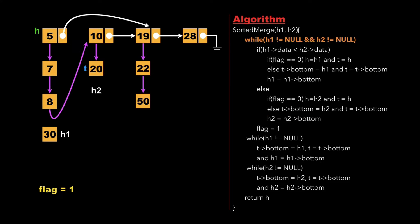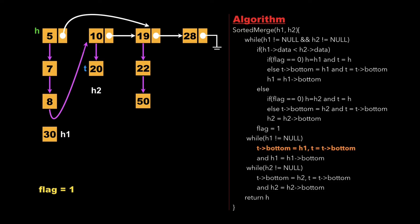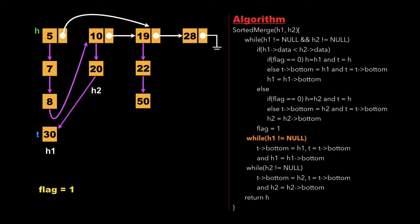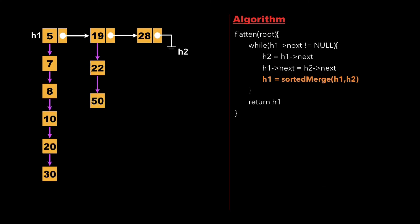Since h2 is now null, we exit the while loop and enter another while loop where h1 is not null. We update t's bottom as h1, so node 20's bottom pointer points to 30, and t updates to 30. Then h1 advances to h1's bottom, pointing to null. We exit the while loop and return h — the head pointer of the updated linked list. The merged sub linked list now contains 5, 7, 8, 10, 20, 30 in sorted order, stored via the bottom pointer and pointed to by h1.